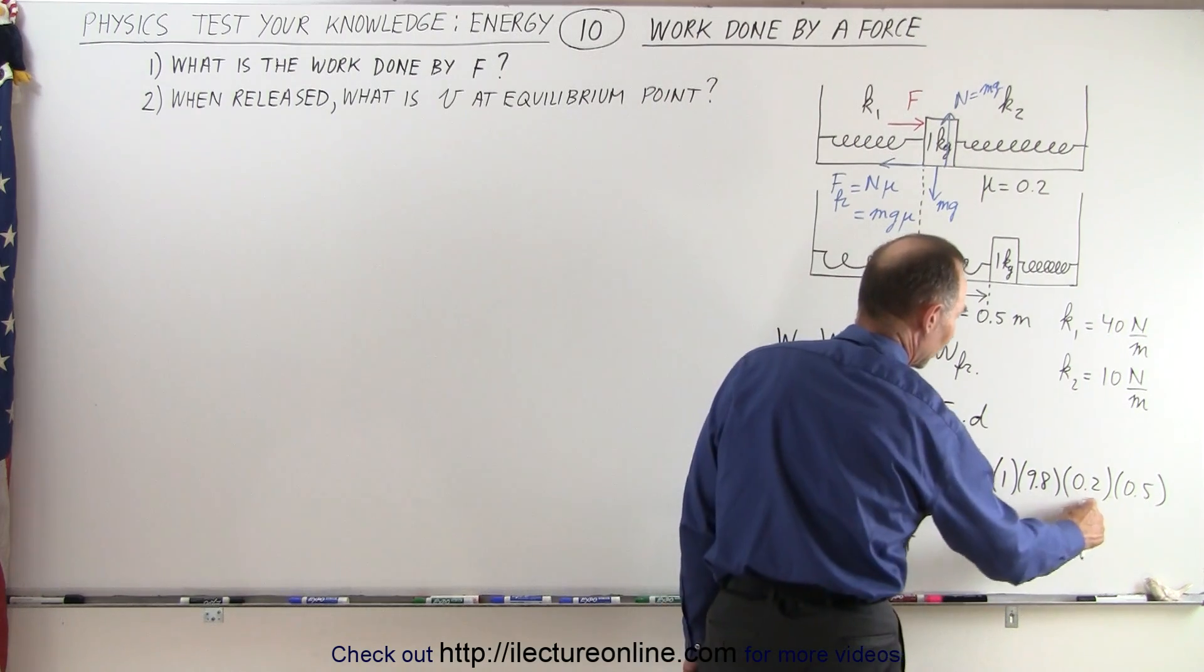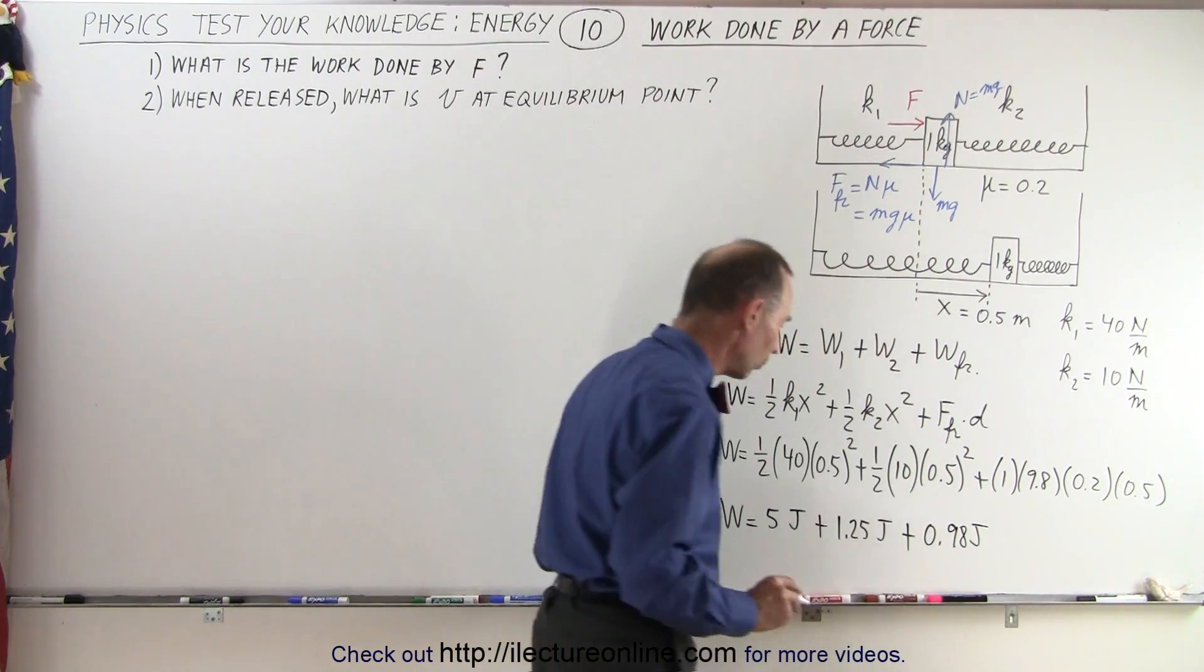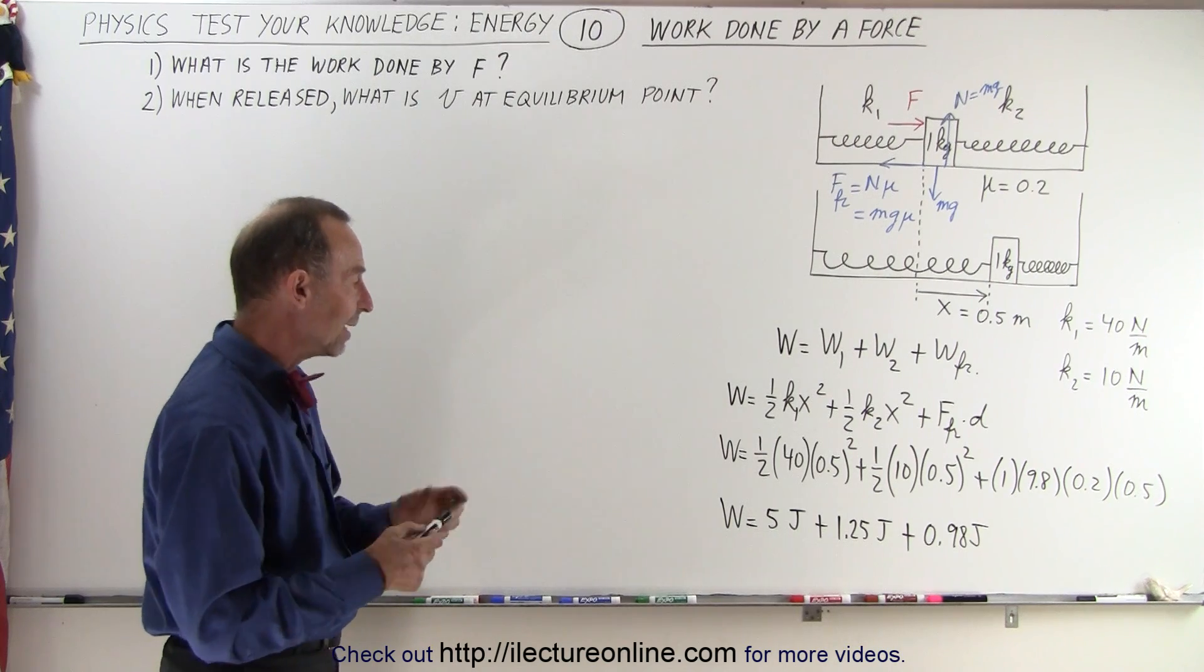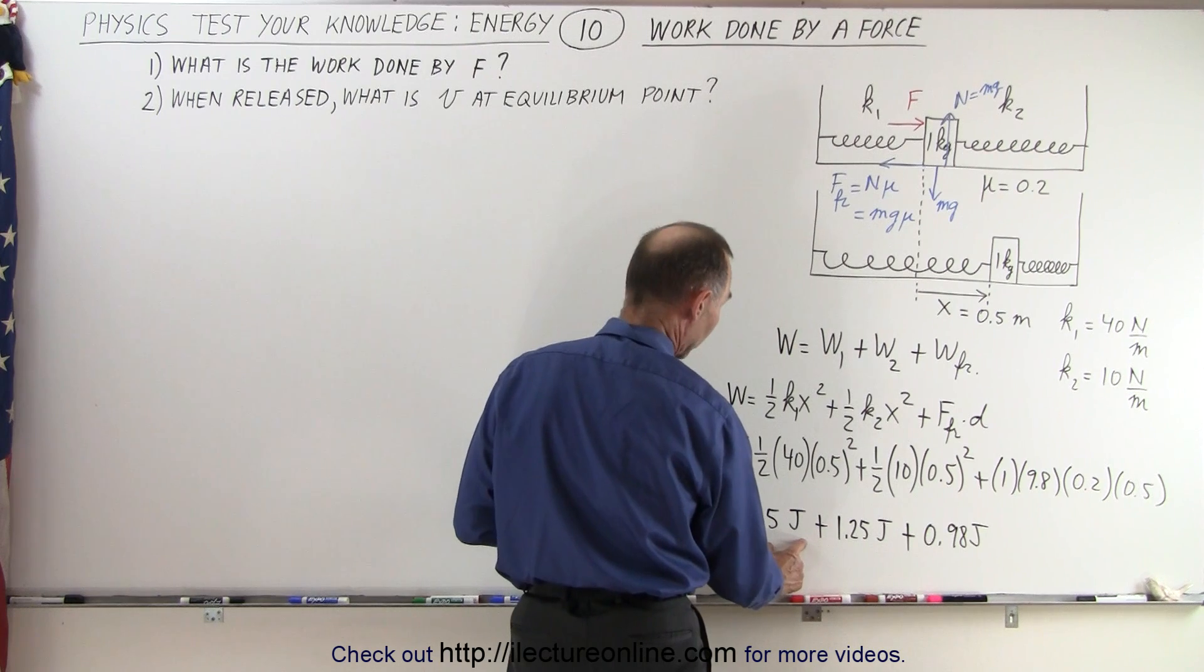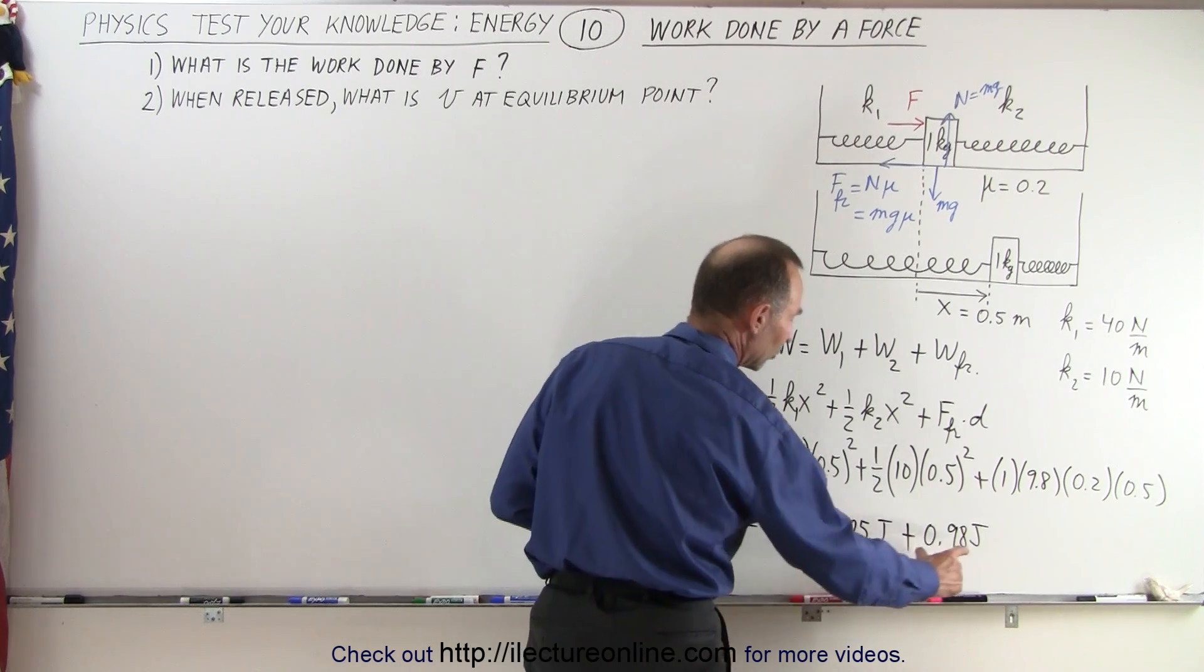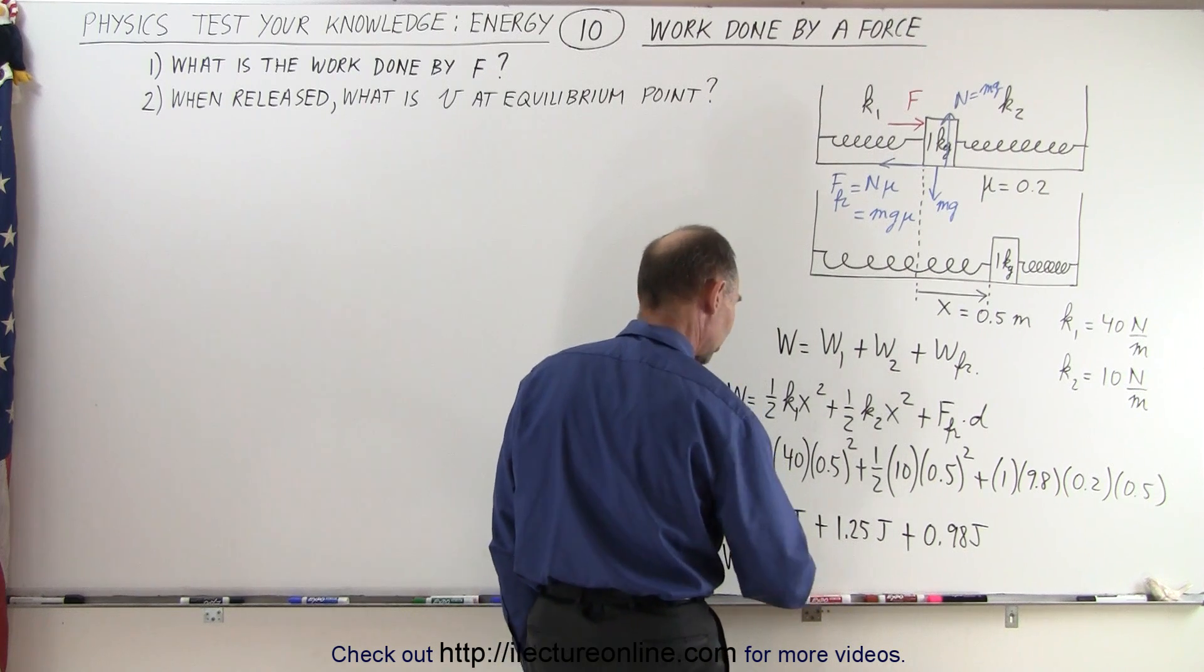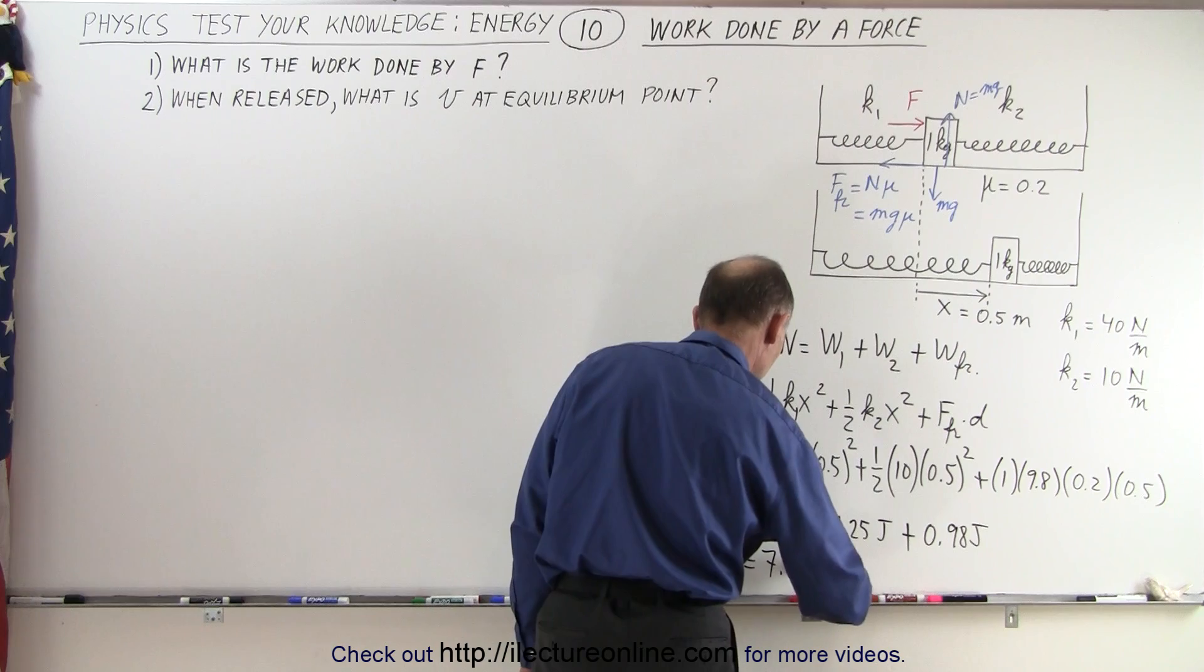So we can see then that this is to elongate spring 1, to compress spring 2, and to overcome the friction. When we add it all together, the work done is equal to 6.25 plus 0.98, which is 7.23 joules.